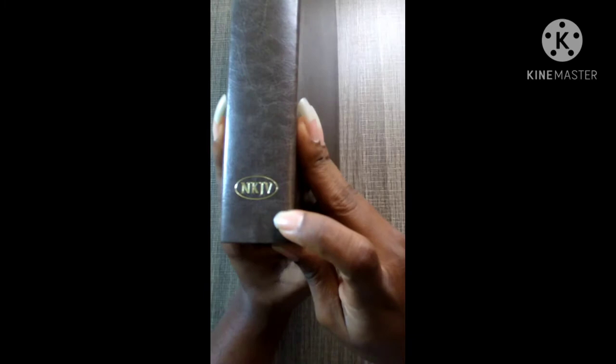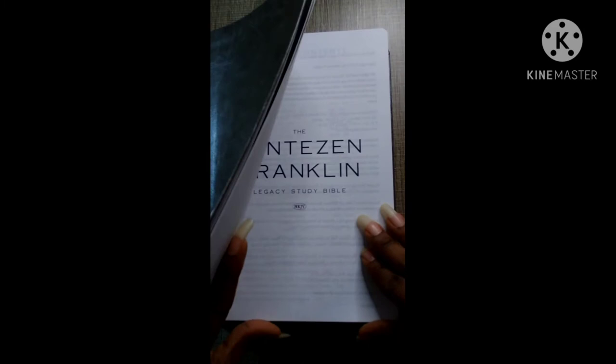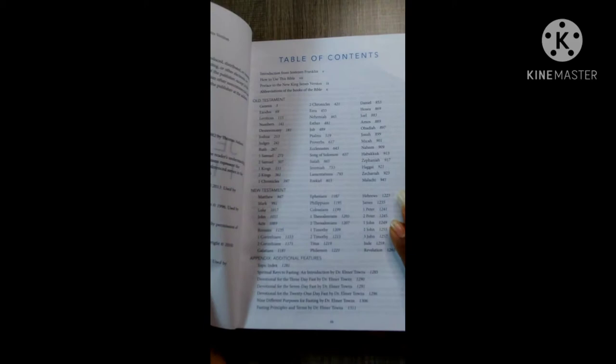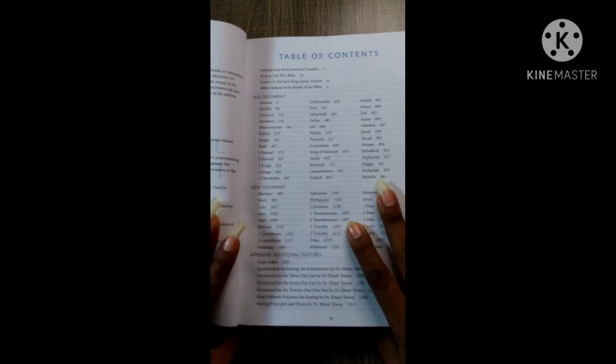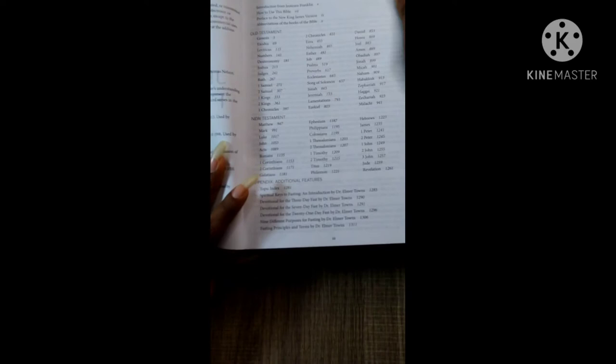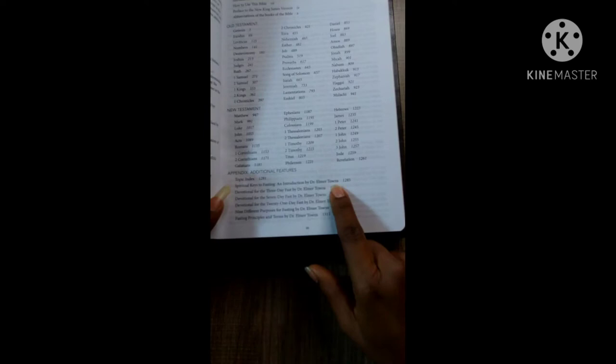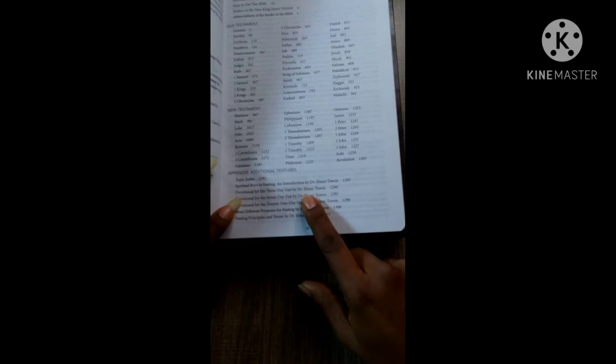It's the New King James Version. I did see when I was reading the description that it had 150 articles by Franklin. This is the table of contents right here. I love the fact that I have his book. I read it one time where Jentezen Franklin talked about Dr. Elmer Towns, and I think he even forwarded a book for Dr. Elmer Towns about fasting.